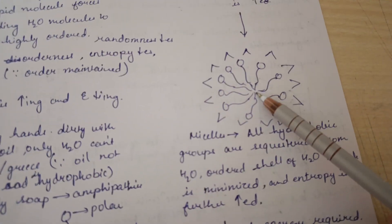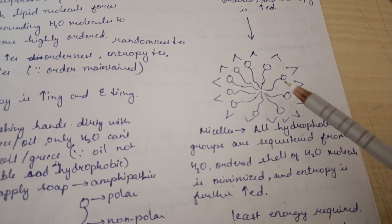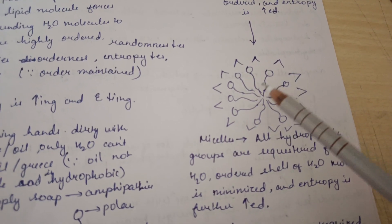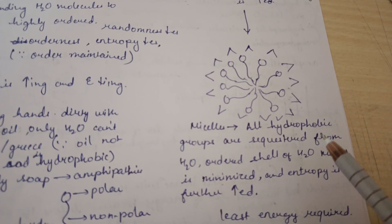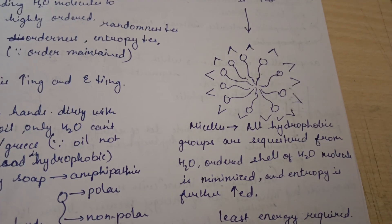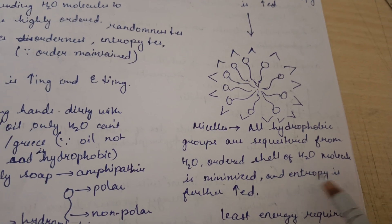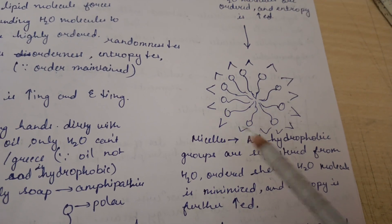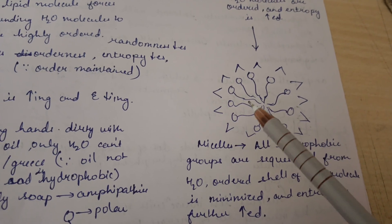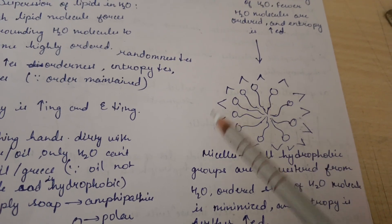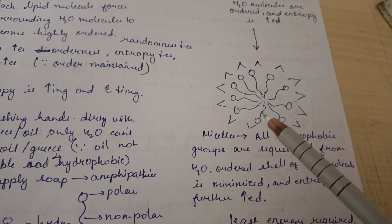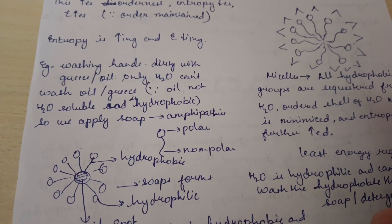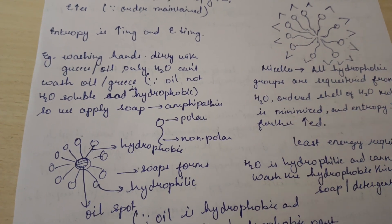This leads to the micelle structure, where the outer part is hydrophilic and the inner core is hydrophobic. In micelles, all hydrophobic groups are sequestered away from water, the ordered shell of water molecules is minimized, and entropy is further increased. Only the hydrophilic part interacts with water, while the hydrophobic parts interact with each other via van der Waals forces, and the ordered arrangement of water molecules is decreased.